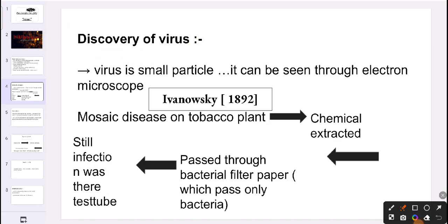Now let's see the discovery of virus. Virus is a small particle — smaller than bacteria — measured in nanometers. That is the reason we cannot see it in a light microscope. To see the virus we have to use an electron microscope, but the electron microscope was discovered after we already knew about virus. So its structure could only be confirmed later. Ivanovsky in 1892 studied mosaic disease in tobacco plants.